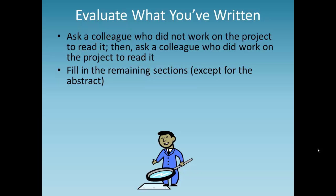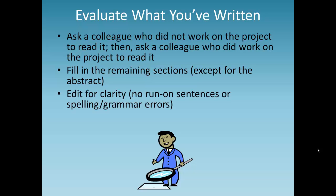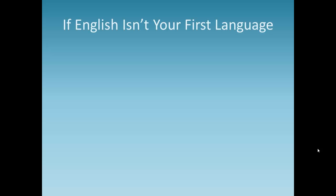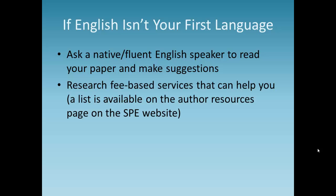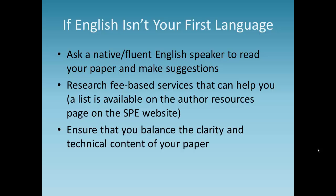After every section is complete, the editing process begins. Edit your paper several times — any writer will tell you that the first draft is nowhere near the last. Edit for clarity, remove run-on sentences and spelling errors, cut extraneous information and stick to the main topic. Ask other people to read your paper for clarity. If English isn't your first language, ask a native or fluent English speaker to make suggestions, or use a fee-based service to help improve the quality of your written English. Ensure a balance in the clarity and technical content of your paper.